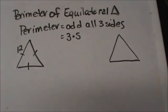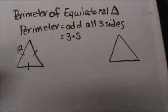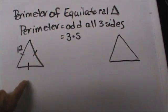Hi, welcome to MooMooMath. Today we are going to look at finding the perimeter of an equilateral triangle. First of all, you need to know that an equilateral triangle is a triangle that has three equal sides.